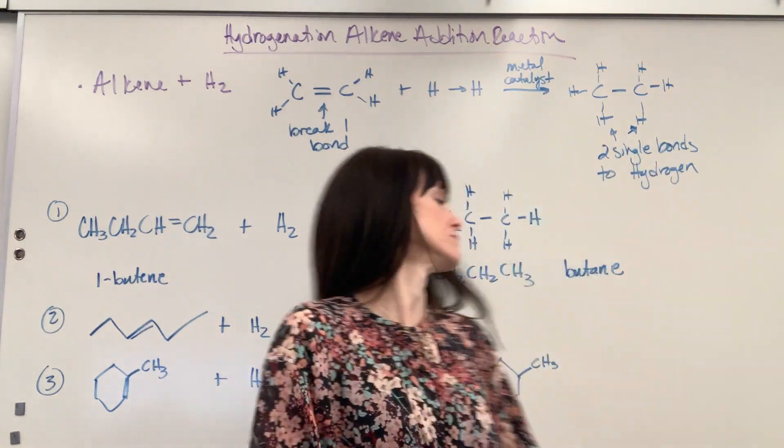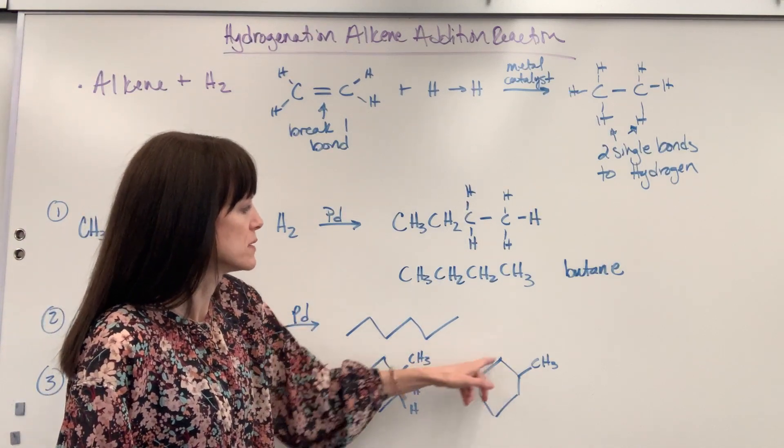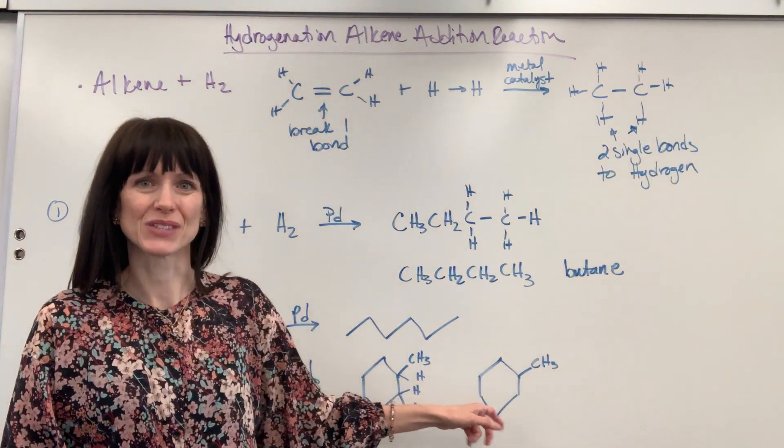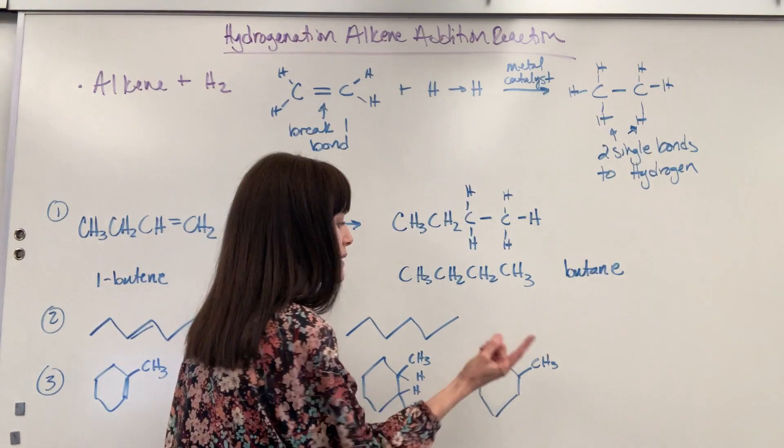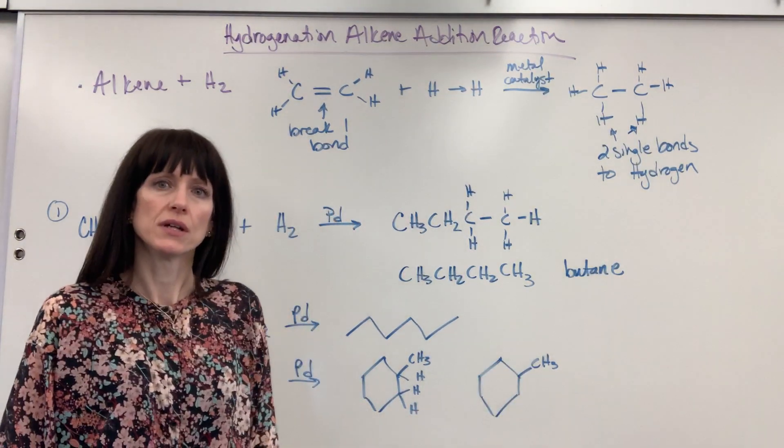And then there's the hydrogen that was already there. So how would I draw this? I would just draw the methylcyclohexane. Take out that double bond and it's understood there's another hydrogen and another hydrogen right there.